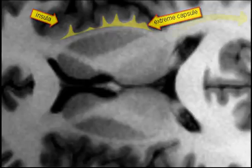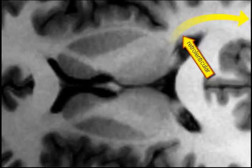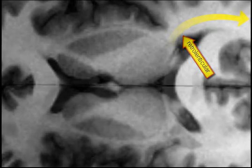Finally there are two additional white matter compartments. The first is the retrolenticular white matter or optic radiation. The second is the acoustic radiation, but that fiber compartment runs sublenticular, below the level of this MRI.